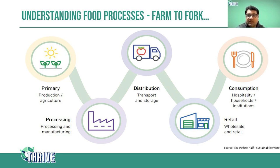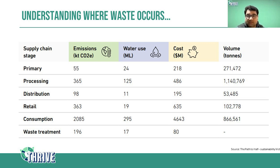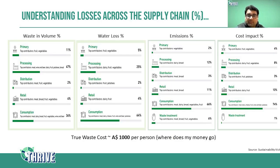This slide shows the whole supply chain graphically: from primary agriculture, to processing and manufacturing, then distribution to retail, and finally on to our plate. The table shows where waste occurs across six stages — primary, processing, distribution, retail, consumption, and treatment. At each stage there are significant emissions, water use, and financial losses, which are all quantified here.